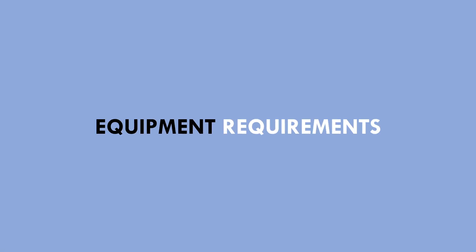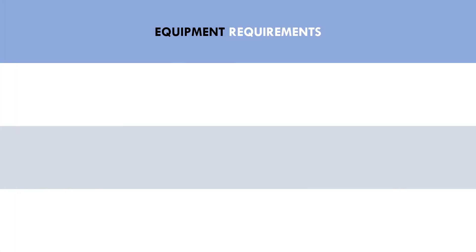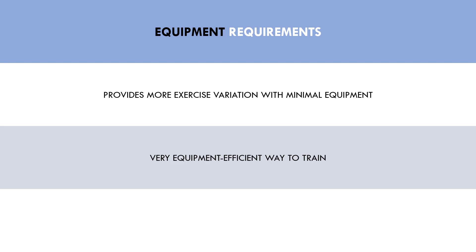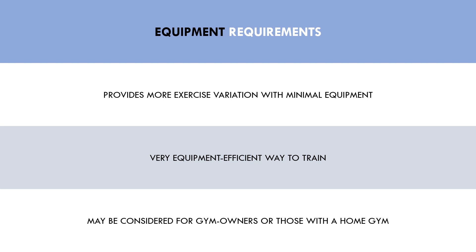The last distinct benefit of free weights over machines is equipment requirements. This is more of a practical consideration rather than a physiological benefit. Free weights are highly versatile — having a barbell with plates and a set of dumbbells can allow trainees to train the entire body. Machines generally only allow you to perform one exercise in one set pattern. Cable machines may be more versatile, but are still not nearly as resourceful as free weights. This may be a concern for gym owners with limited space, or those with home gyms who need cost and space efficient equipment.